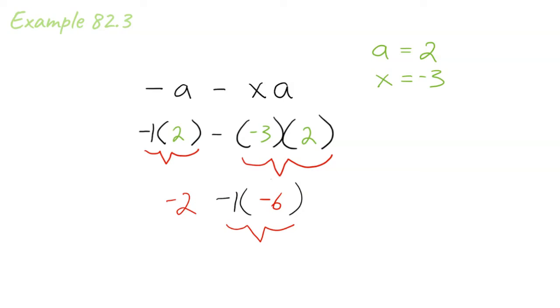And then we have negative 3 times 2 gives us a negative 6, but we still have that minus sign in front of the negative 6. So we drop in our 1. Negative 1 times negative 6 is a positive 6. So negative 2 plus 6 equals 4.